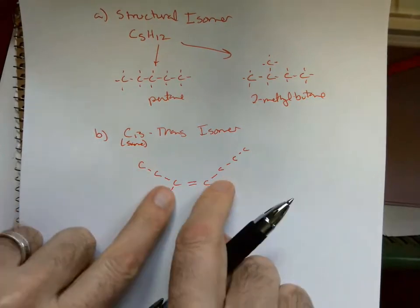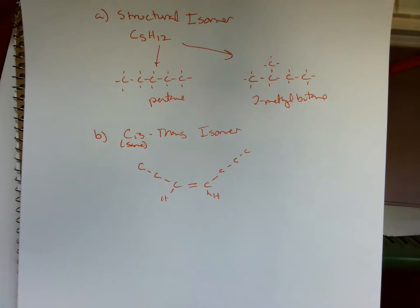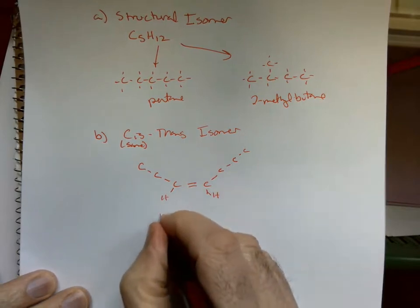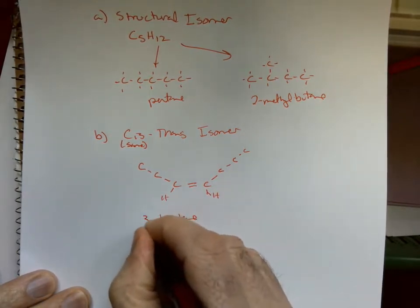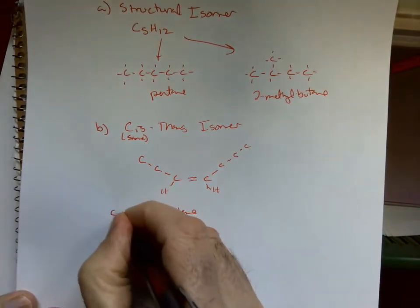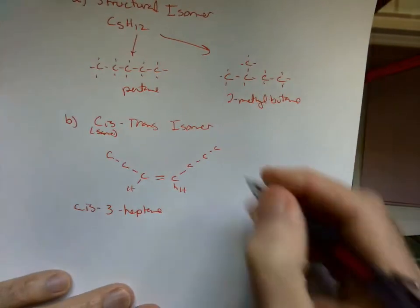Because both branches are going up, cis means same, so these guys are going in the same direction. They're both heading up. So if the carbon chains were both heading down or both heading up, we've got cis. Just name it the way you would normally name it: one, two, three, four, five, six, seven. So we've got a heptene. The ene is on the third carbon, and once you're done naming it, cis 3-heptene.